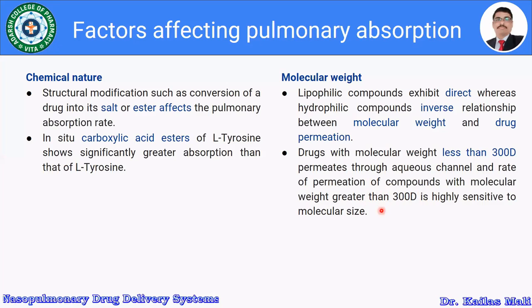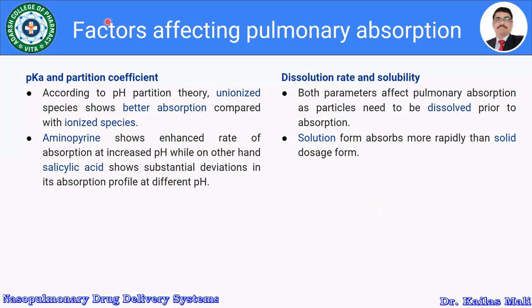Let us see the pKa and partition coefficient. According to pH partition theory, unionized species show better absorption compared with ionized species. For example, aminopyrin shows an enhanced rate of absorption at increased pH, while on the other hand, salicylic acid shows substantial deviation in its absorption profile at different pH values.